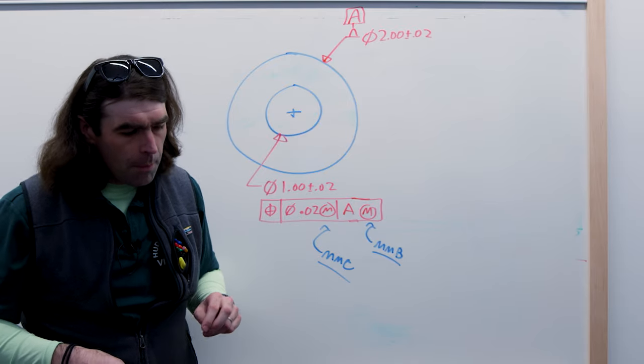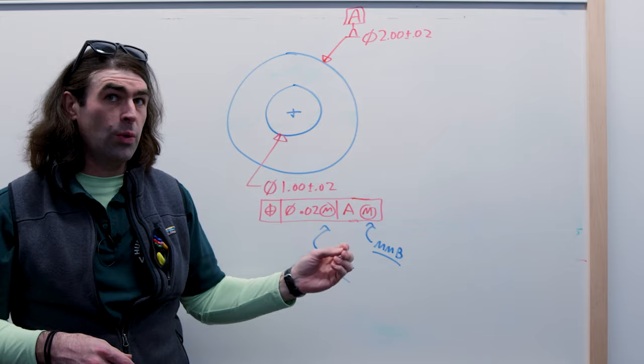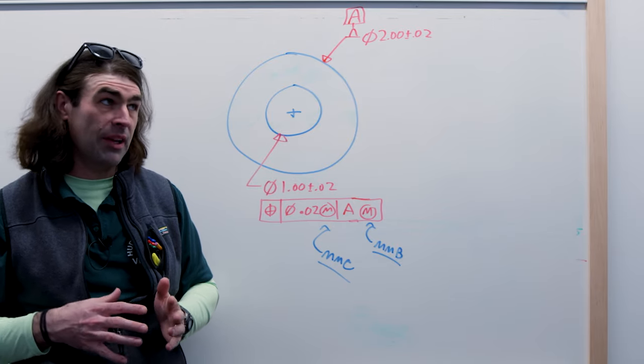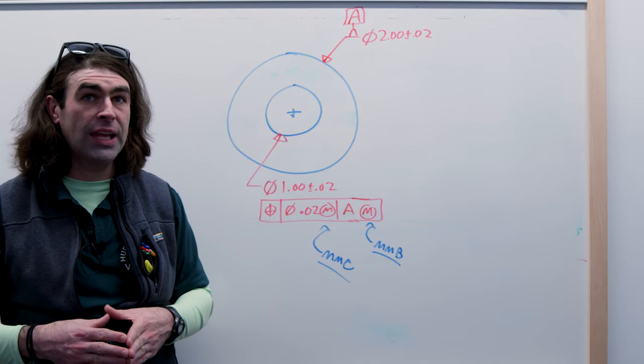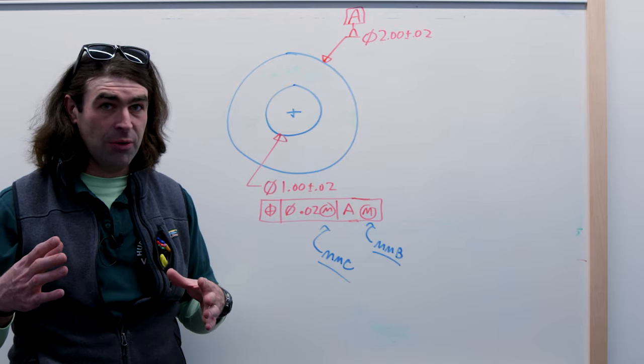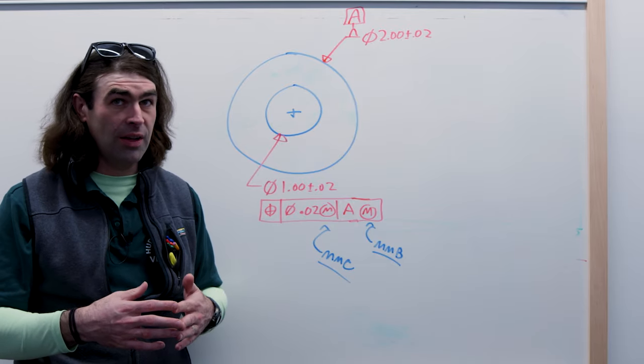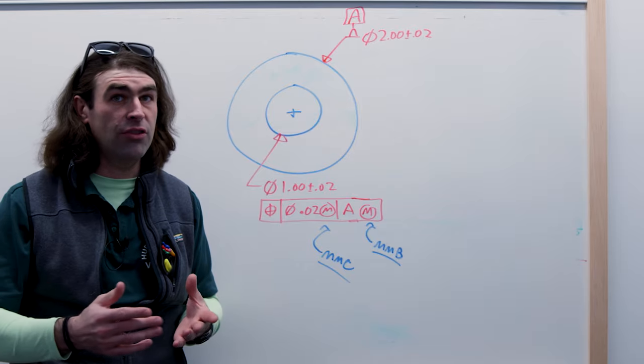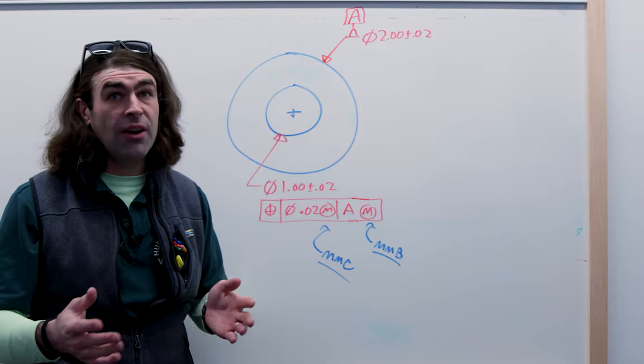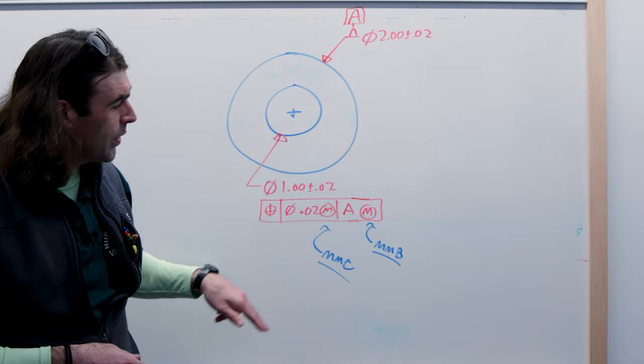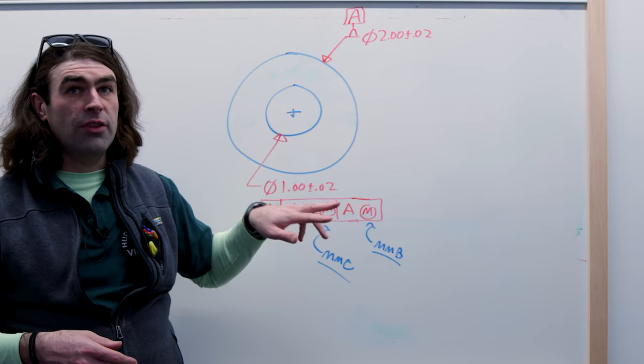Now what does this do? Let me start at what it doesn't do. It doesn't force you to inspect it with hard gauges. That's something I've heard a good bit, that if you see this symbol it means you must inspect with a hard gauge, you must have expensive custom stuff to check the part. That isn't true. It's also not true that you must use a coordinate measuring machine that can do all the calculations for you. It's preferable to do it that way, but you don't have to.